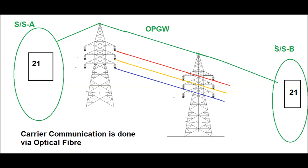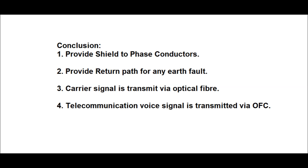If any fault occurs, it is sensed by the distance relay — that is, a Zone 1 carrier signal is sent from the distance relay. The analog signal is transformed to a digital signal via a digital protection coupler, and the same signal is transmitted via optical fiber to the remote substation. At the remote substation, the digital protection coupler again transforms the digital signal back to an analog signal, which is received by the distance relay located at the remote end. Thus carrier communication is done by optical fiber.